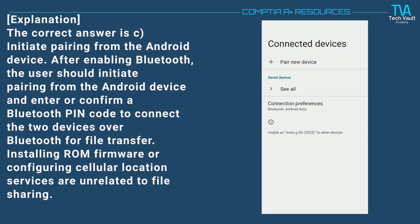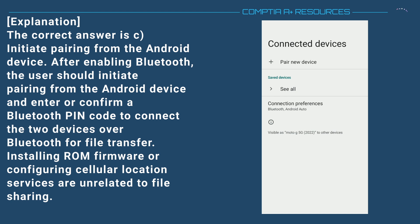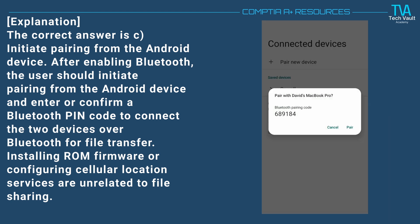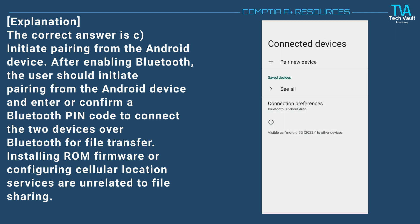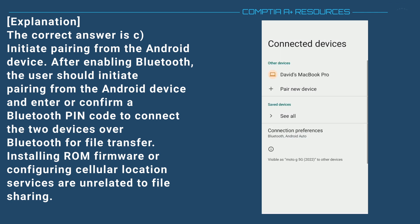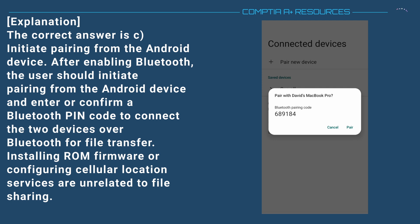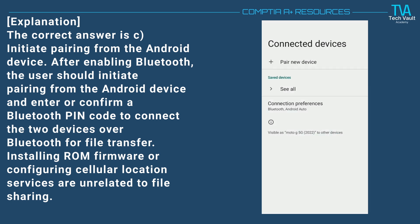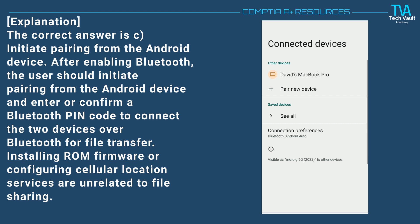The correct answer is C. Initiate pairing from the Android device. After enabling Bluetooth, the user should initiate pairing from the Android device and enter or confirm a Bluetooth pin code to connect the two devices over Bluetooth for file transfer. Installing ROM firmware or configuring cellular location services are unrelated to file sharing.